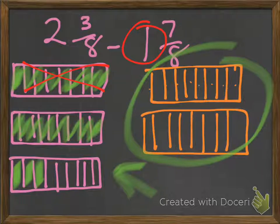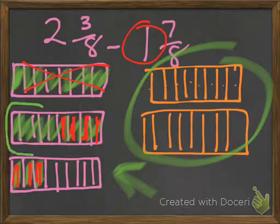And 7/8. So we take away 1, 2, 3, 4, 5, 6, 7. And what do we have left? We have...